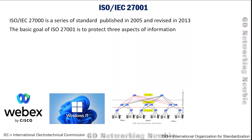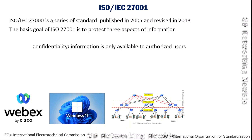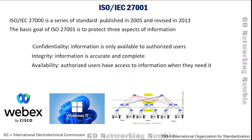Within the 27000 series, the 27001 standard is the most important one. Its basic goal is to protect three aspects of information, since information is the most important asset of any organization. Those three aspects are: confidentiality — meaning information is only available to authorized users; integrity — meaning information is accurate and complete; and availability — meaning authorized users have access to information when they need it.